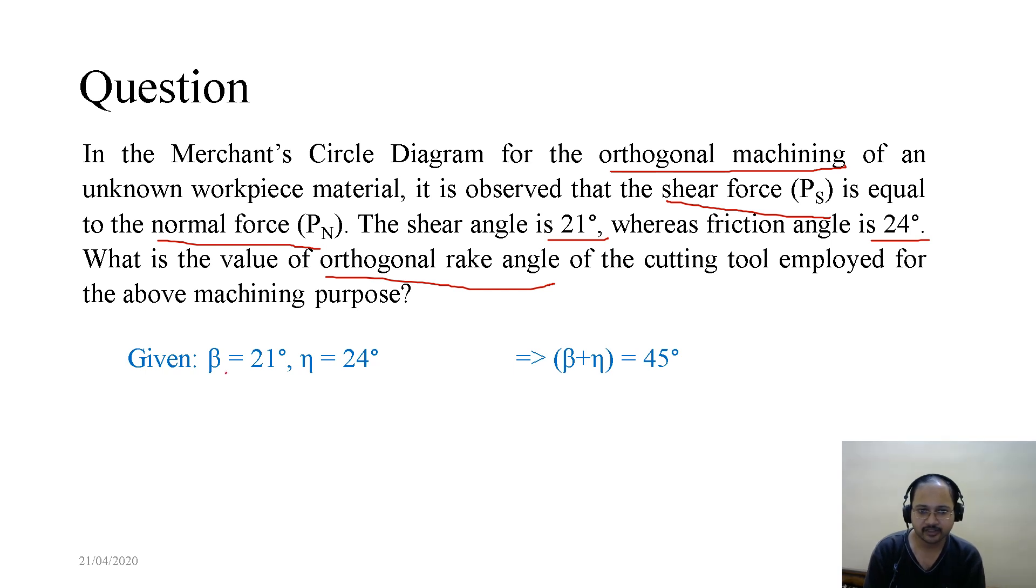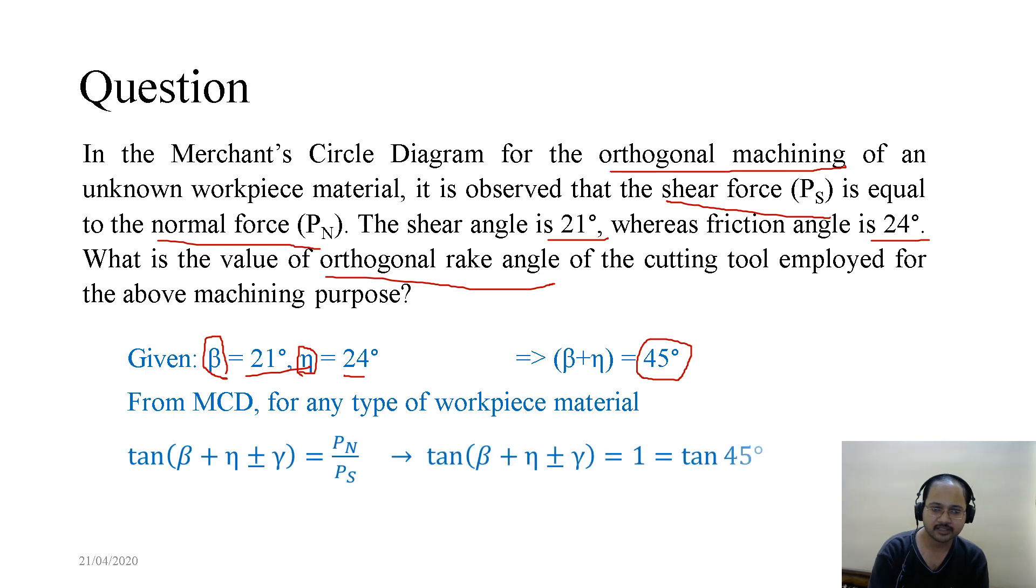Now what is given? β equals 21 degrees and η equals 24 degrees. That is the shear angle and the friction angle. And if we sum them, immediately we find 45 degrees. From the Merchant Circle Diagram, for any type of workpiece material, we know this relation is true: tan(β + η + γ) equals Ps over Pn.